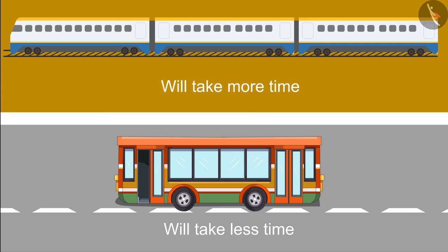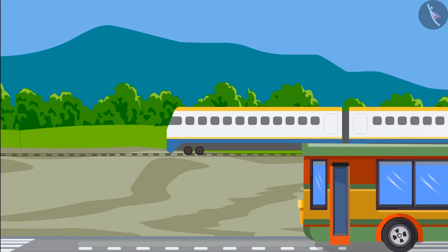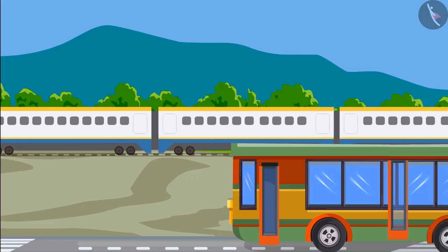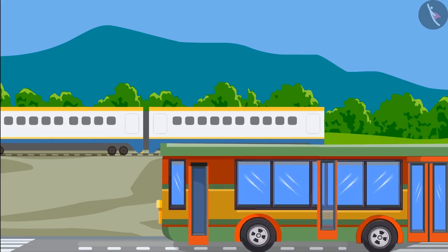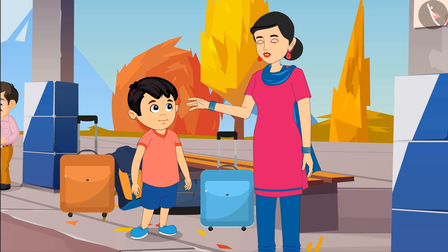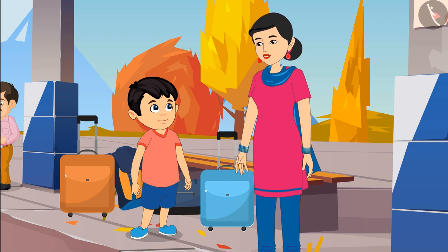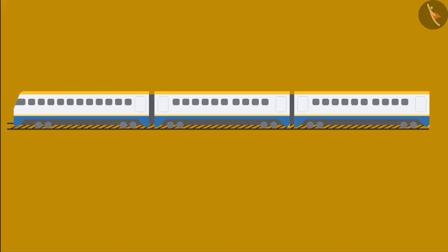His mother replies, "No, Chotu, it's not like that. The train runs faster than the bus. The length of the train is more, but it runs faster. So we will reach by train quickly."